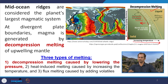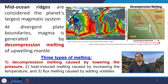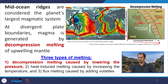Beyond the liquidus line, all rocks are in molten format. So we have the solidus and we have the liquidus, and the region in between is called partial melting. Partial melting means the rocks are partly in melt form and partly in solid form.